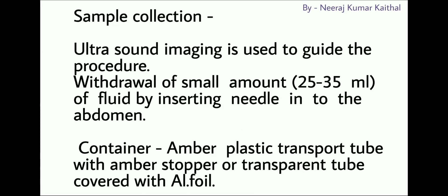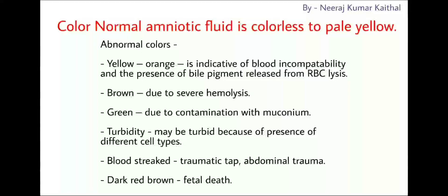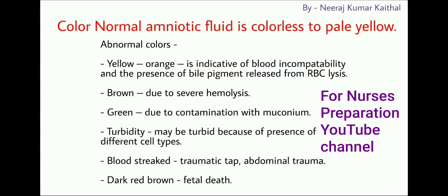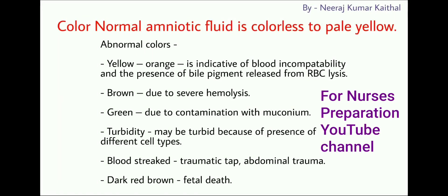A stained amber plastic transport tube with amber stopper, or a transparent tube covered with aluminum foil, is used. Regarding color: normally amniotic fluid is colorless or pale yellow. Abnormal colors include yellow-orange, which is indicative of blood incompatibility and the presence of bile pigment released from RBC lysis. Brown colored amniotic fluid may be due to severe hemolysis.